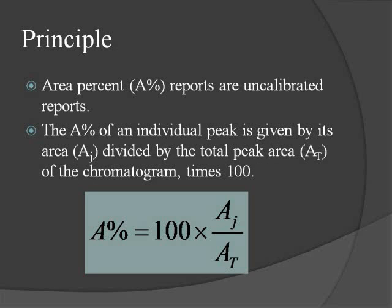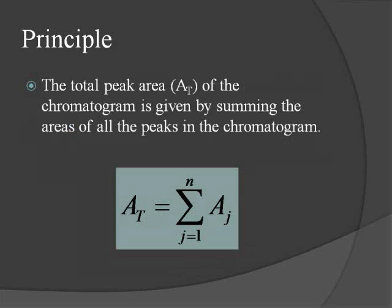As we said earlier, area percent reports are uncalibrated. The area percent of an individual peak is given by its area divided by the total peak area in the chromatogram, the quotient multiplied by a hundred, as you see in the equation. The total peak area of the chromatogram is given by summing up all of the areas of all of the peaks in the chromatogram. It's at this point that one of our assumptions can get in our way. If there is a peak in the sample which does not respond to the detector in use, it will not be accounted for in this procedure.